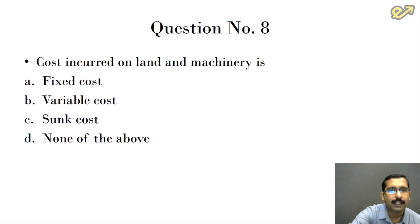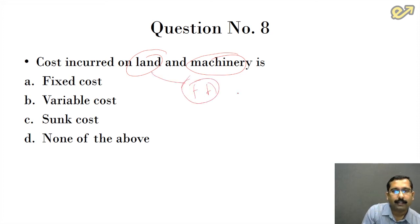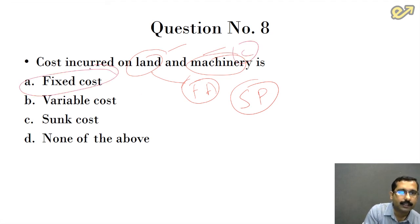Eighth question: cost incurred on land and machinery is—land and machinery remain in the business for a long period as fixed assets. With the change in scale of production, the cost incurred on land and machinery is not going to change. It remains constant. So the answer is fixed cost.